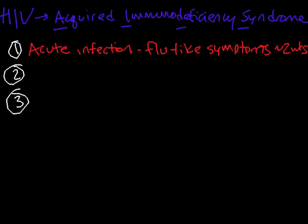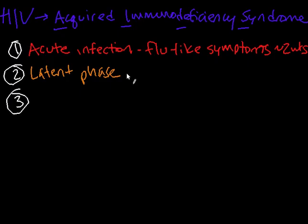We call this phase the latent phase, where there aren't really any symptoms — that's why it's called latent. The virus isn't dormant; it kind of lurks in your body, continually destroying T cells. But your body is also making those helper T cells at a similar rate, so the amount of T cells declines more slowly. Your body compensates really well, so you don't show any symptoms. This can last usually around eight years, but it can be as few as three and as many as 20, depending on the individual and what strain of the virus they have.